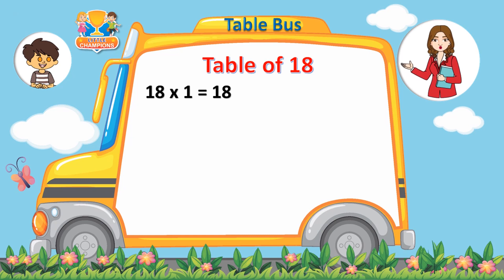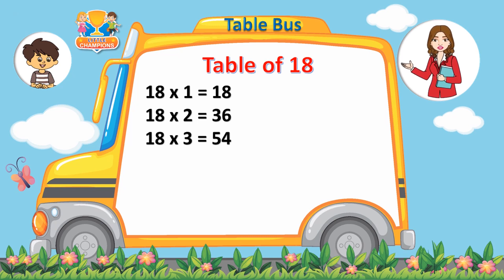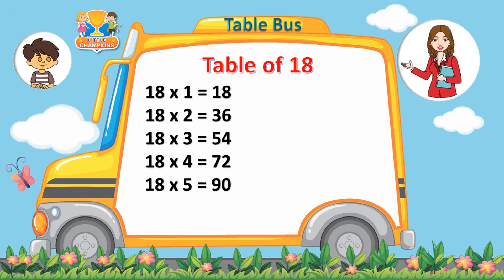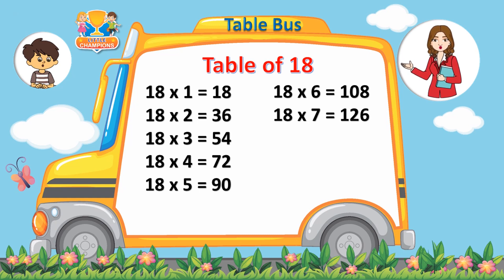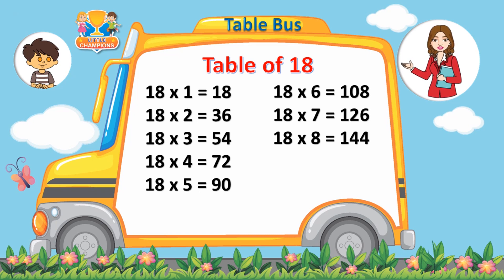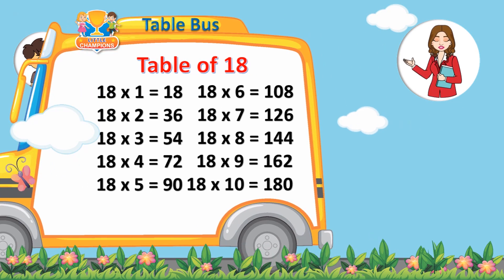18 ones are 18. 18 twos are 36. 18 threes are 54. 18 fours are 72. 18 fives are 90. 18 sixes are 108. 18 sevens are 126. 18 eights are 144. 18 nines are 162. 18 tens are 180.